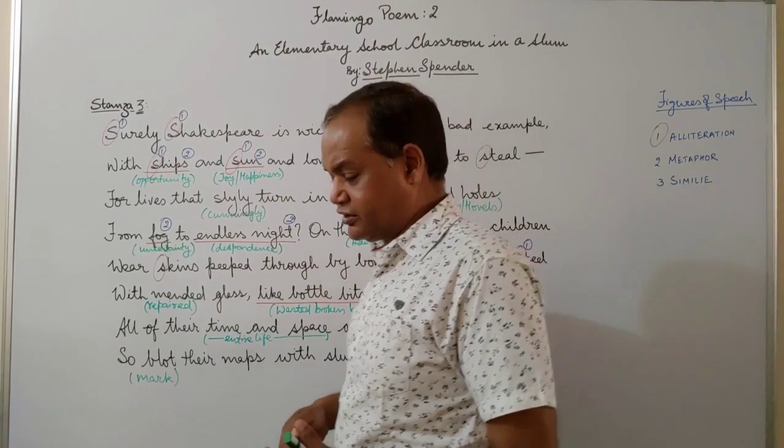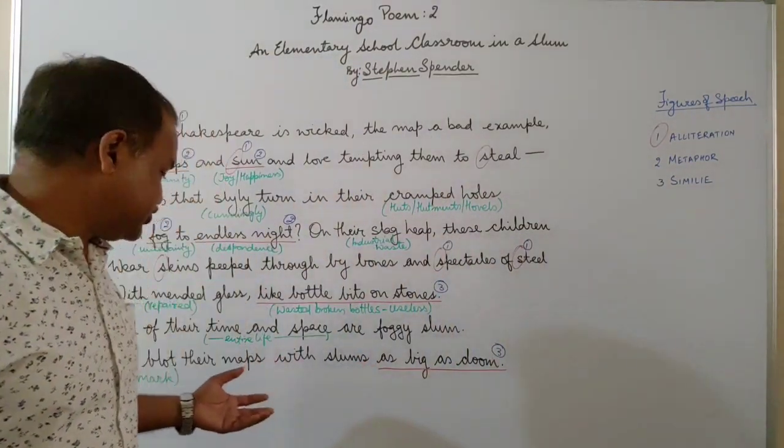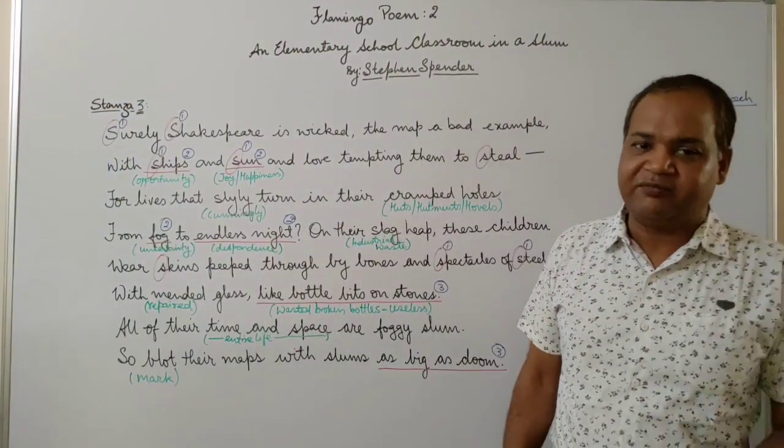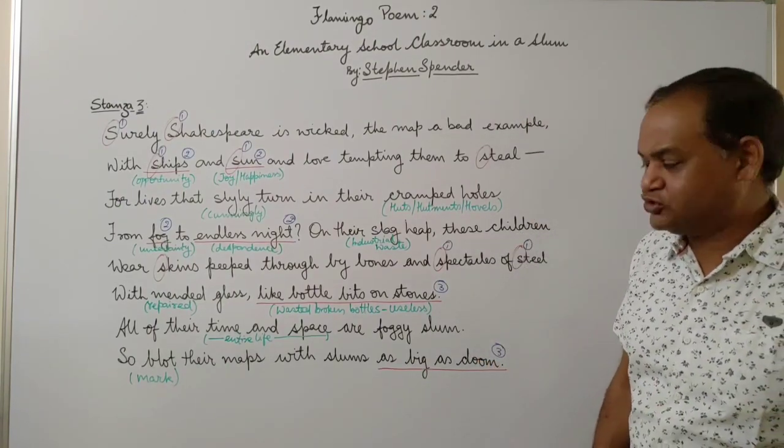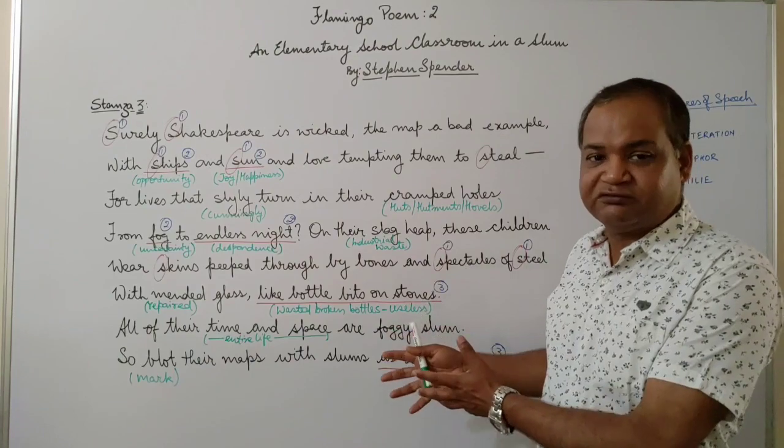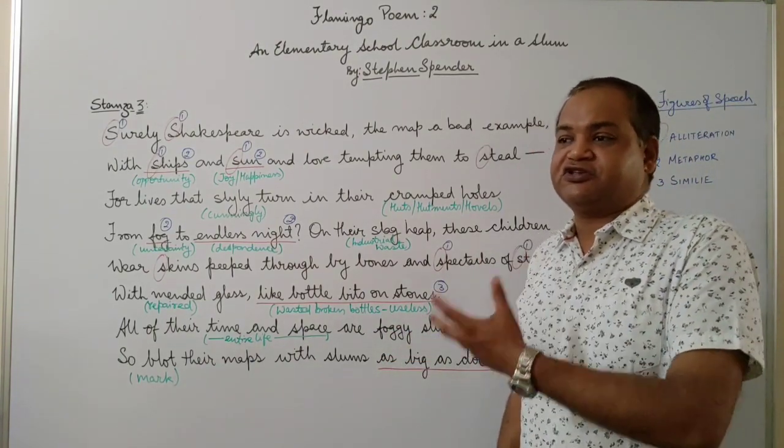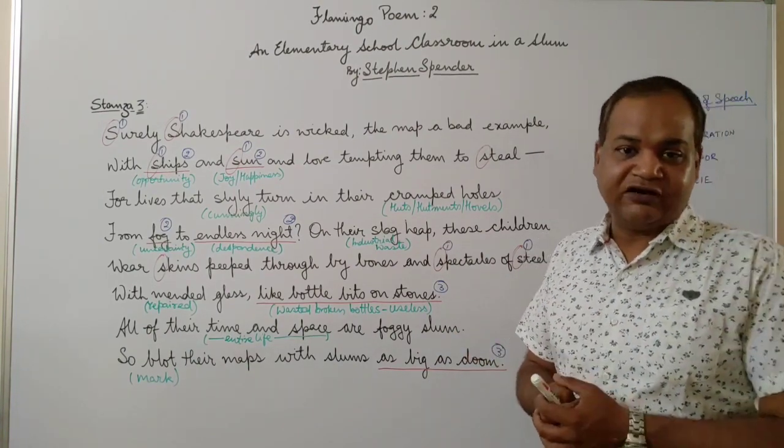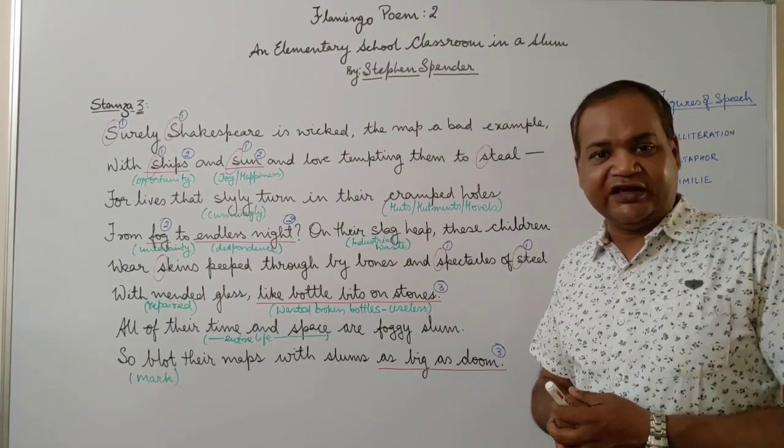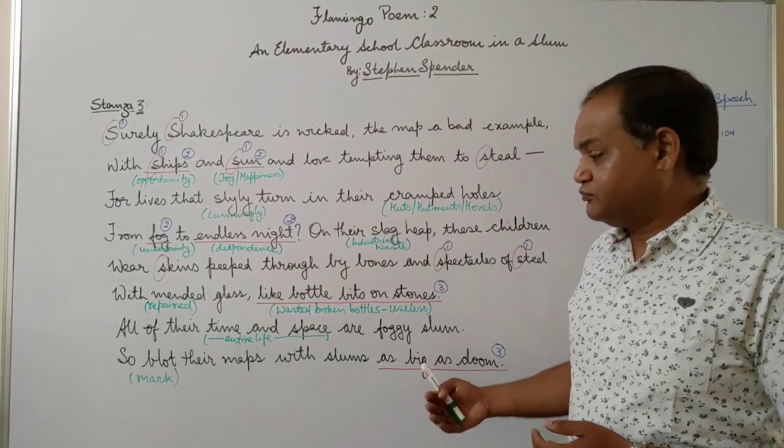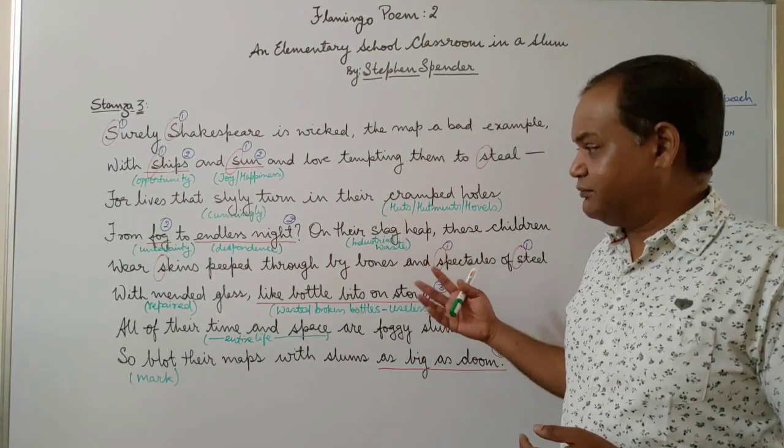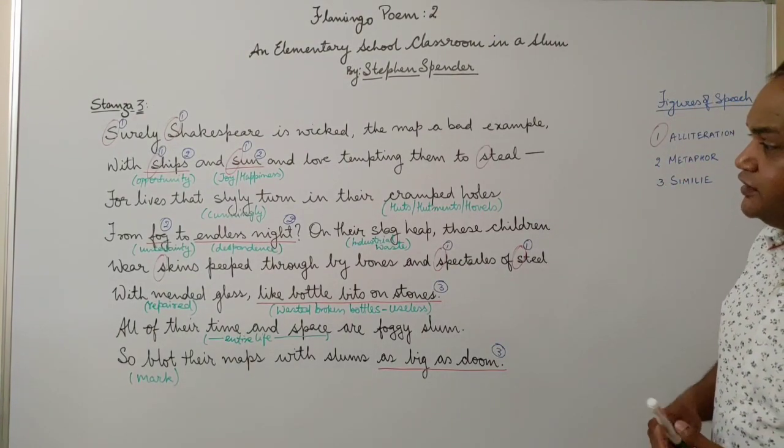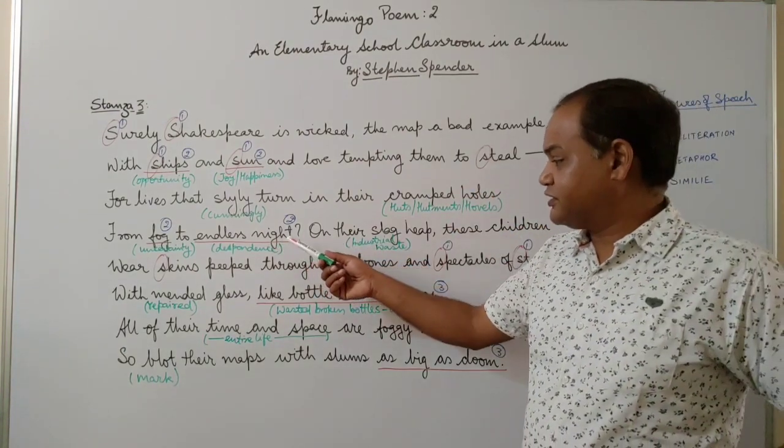And 'all of their time and space are foggy slum'—he says all of their life is spent in the foggy slum. All of their time and space means their entire life is spent in the slum. They're born in squalor and filth and poverty, and they die in the same conditions. And now in the last line we see the frustration of the poet coming out. We see his exasperation. He says 'so blot their maps with slums as big as doom.' So don't give them the political maps that you put up, the open-handed map that is useless, that is of no use to these children. Make them a map where the slums of the world are shown so that these children can relate to the places marked, the slums marked on a map, and take some heart that they are not the only ones who are so unfortunate or struck with misfortune. There are others like them.